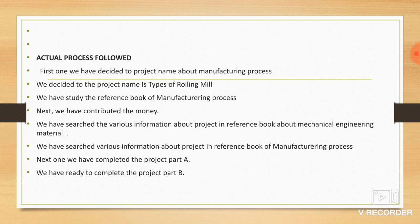Actual procedure followed: First, we decided the project name in manufacturing processes. We decided the project name is types of rolling mill. We have studied the reference book on manufacturing process. We have contributed money. We have searched various information about the project in reference books about mechanical engineering materials. We have searched various information about the project in reference books on manufacturing process. We have completed the project part A and we are ready to complete the project part B.